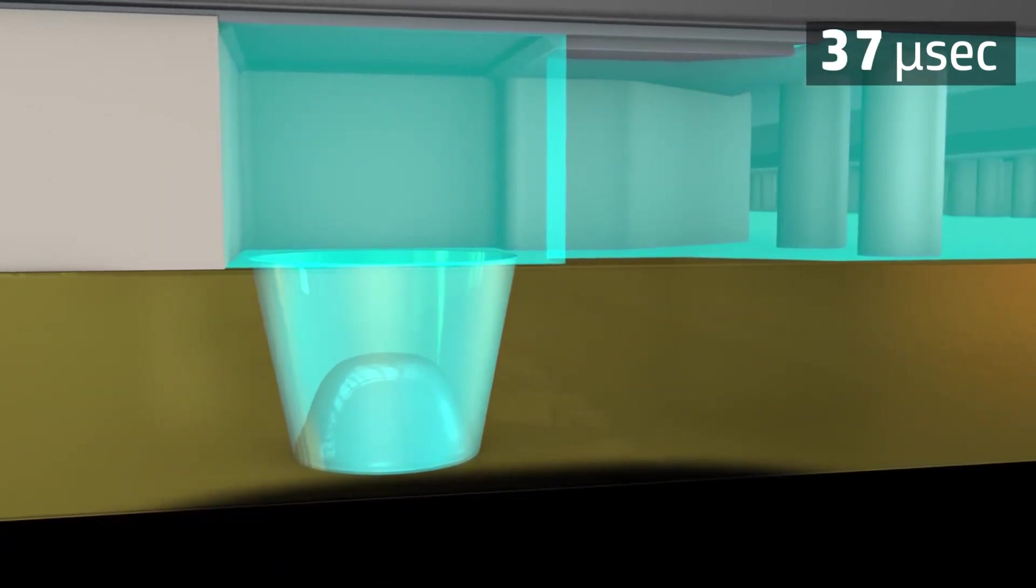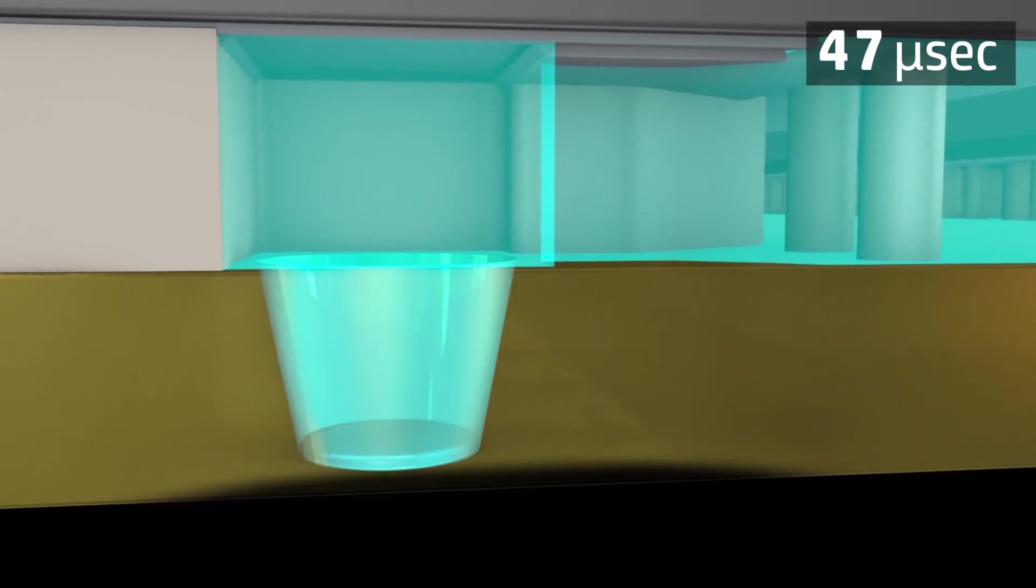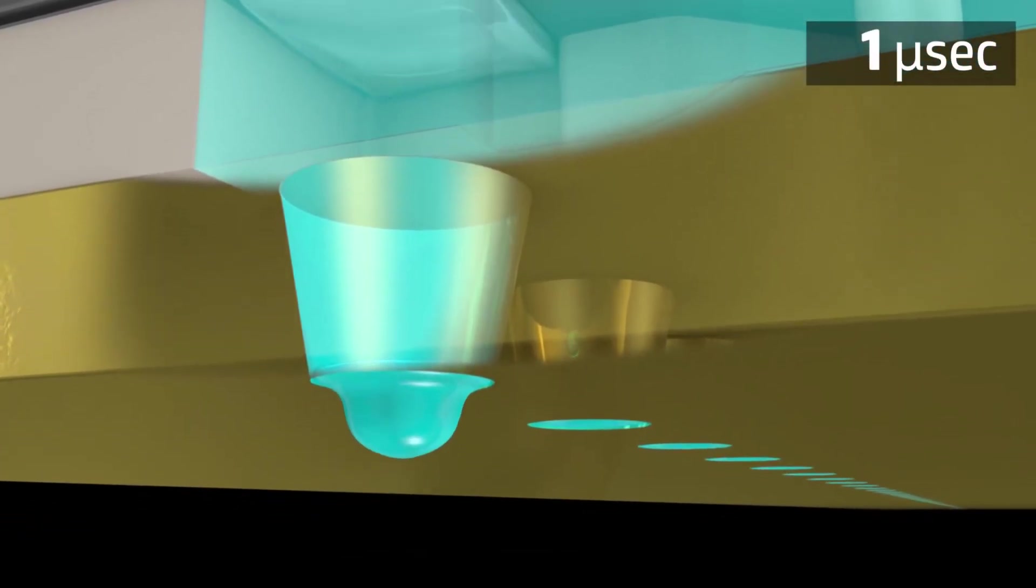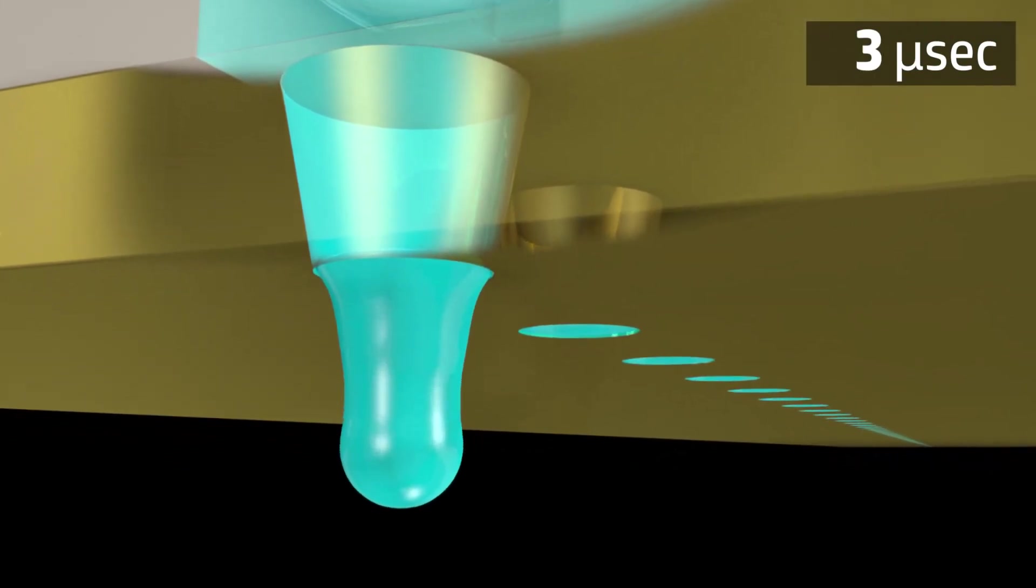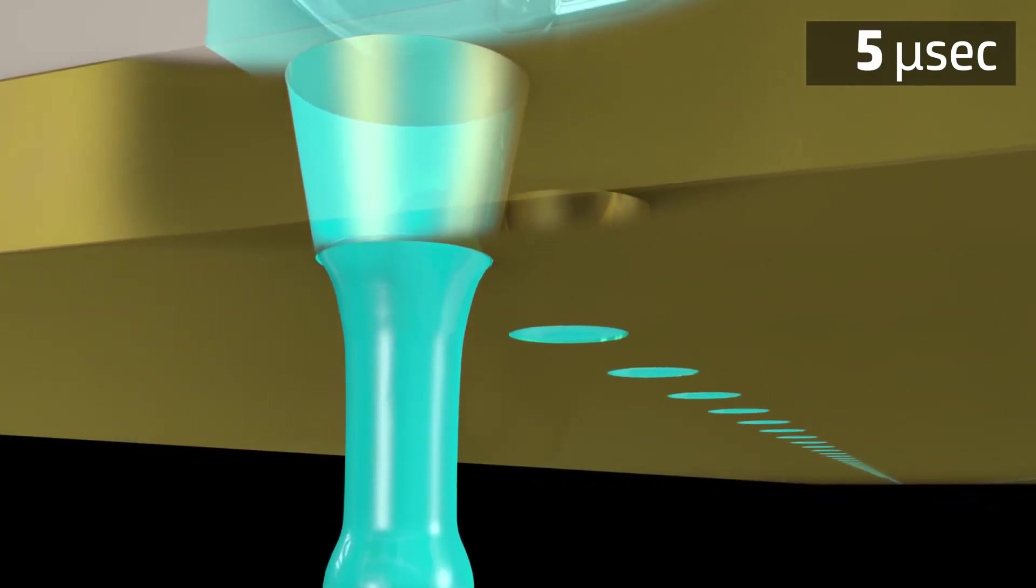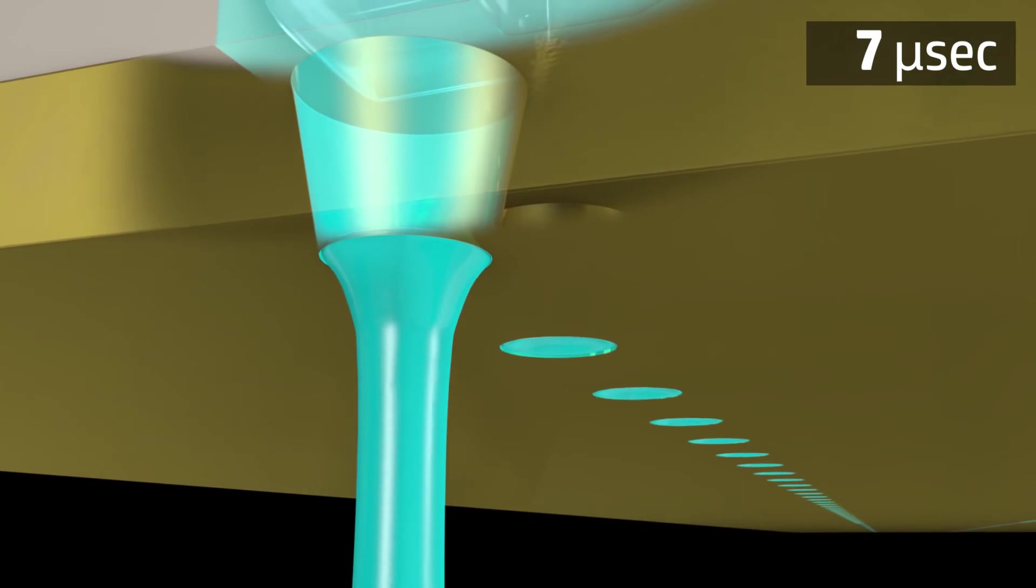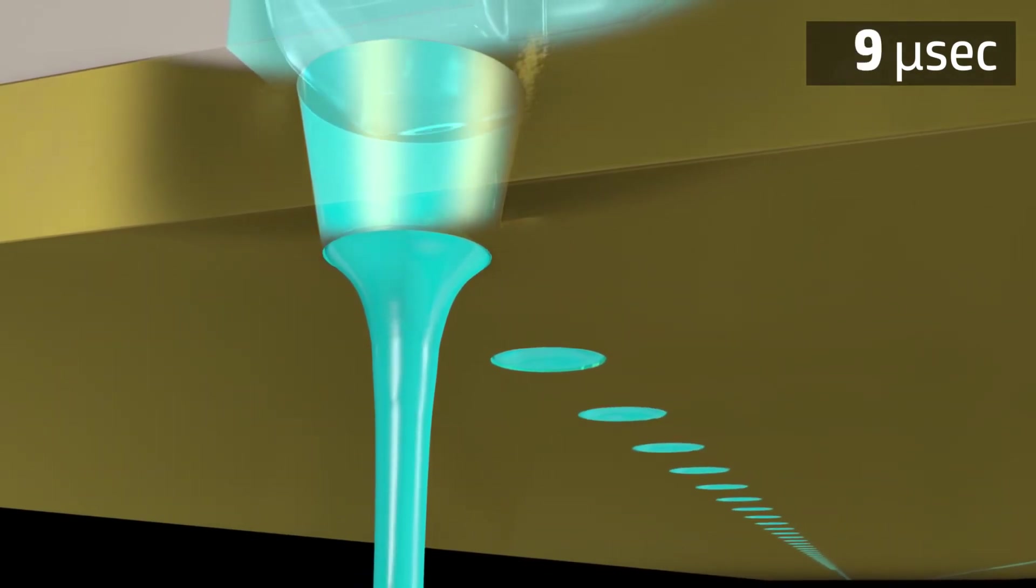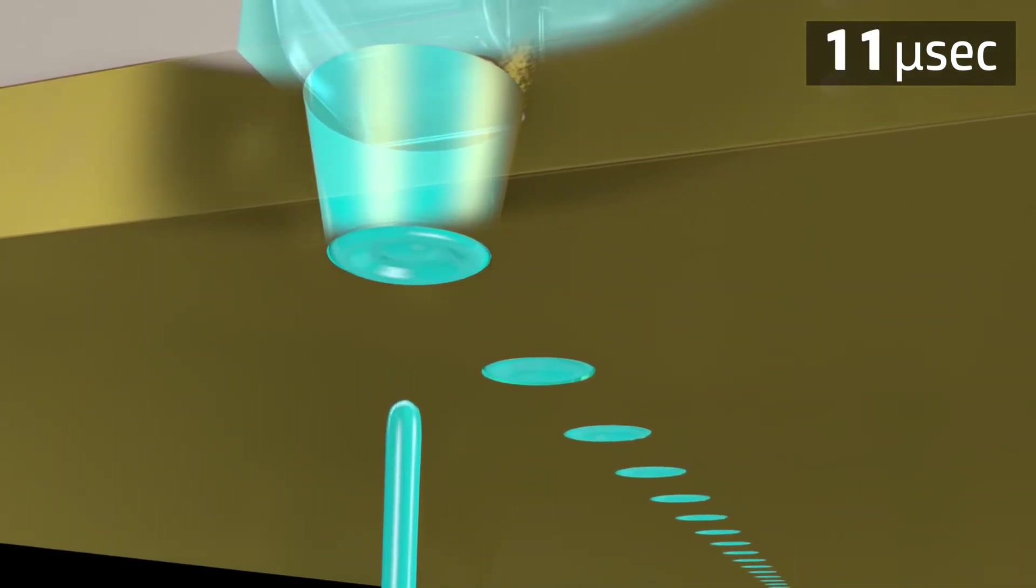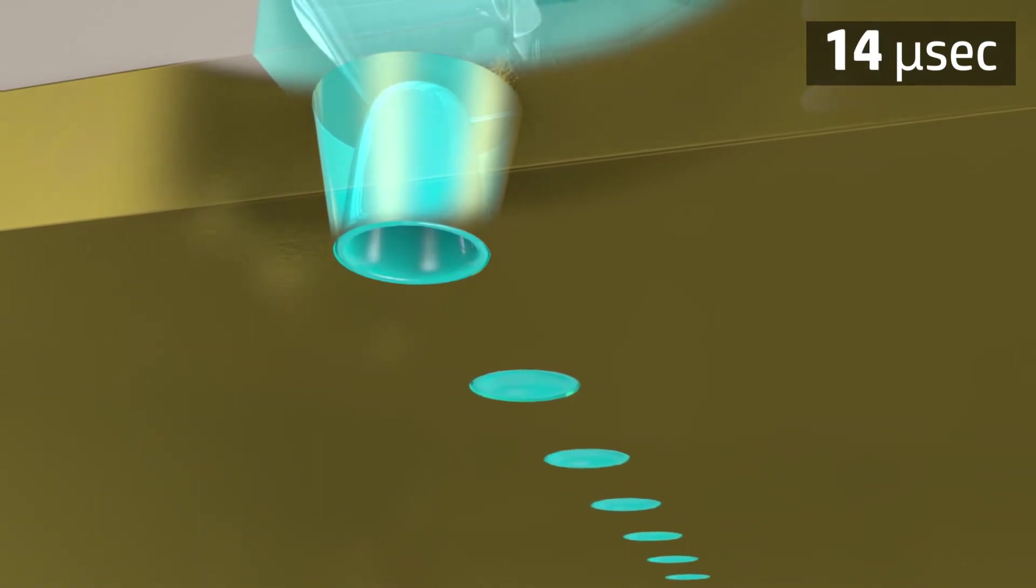The chamber and nozzle are designed for specific drop weight and ink properties. Here's a detailed look at drop break-off. When it separates from the meniscus, the drop's tail isn't moving at all and then surface tension pulls it downward. Break-off is driven by the outward motion of the ink and retraction of the meniscus during bubble collapse.